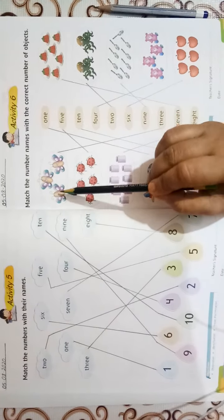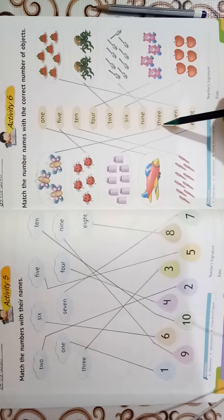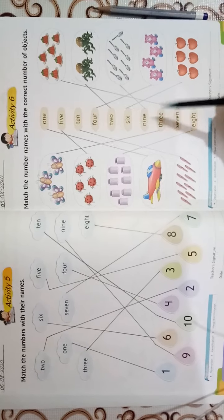Now, how many butterflies are here? 1, 2, 3. So we will match with the number name T-H-R-E-E 3.